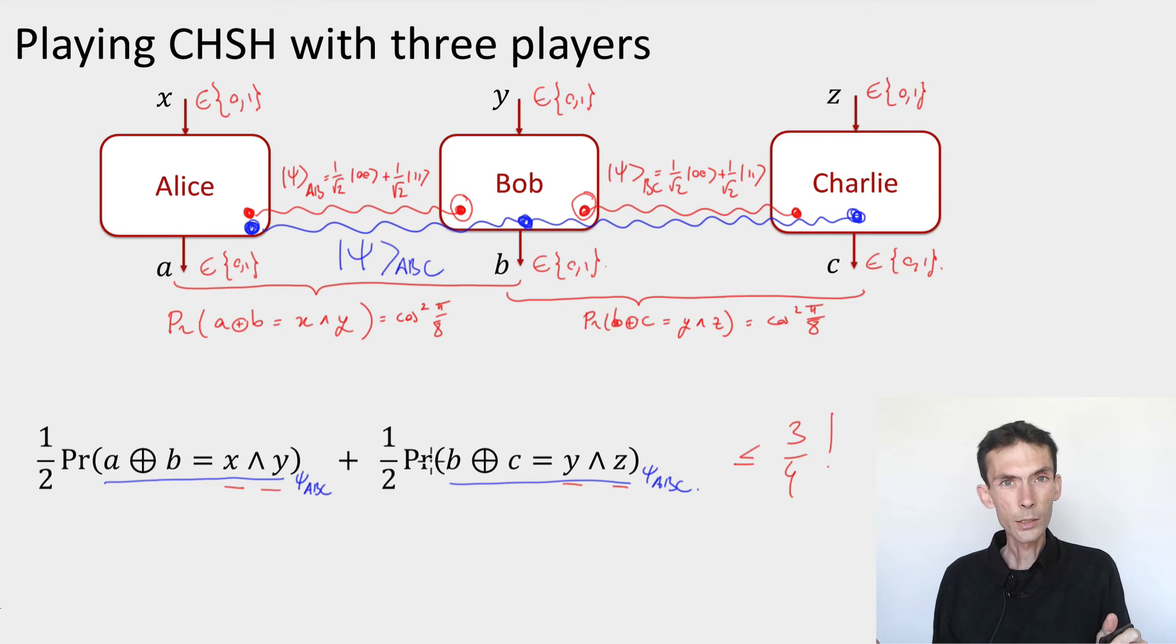This is going to be something that's going to be very powerful in cryptography because it means that in a way if Alice and Bob achieve strong CHSH correlations, so if this expression is cos squared pi over 8, let's say, because it's something that they verify by checking their correlations in between themselves,